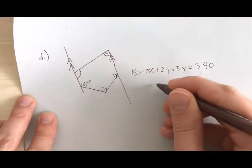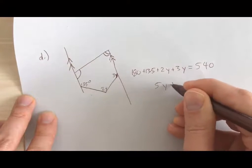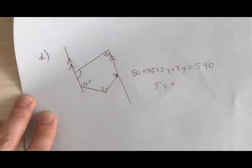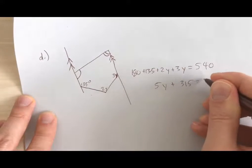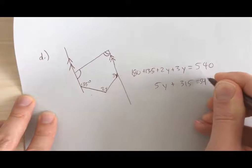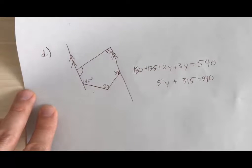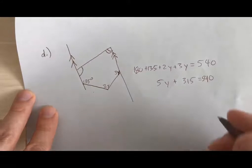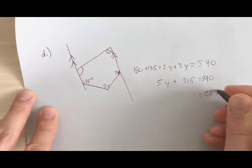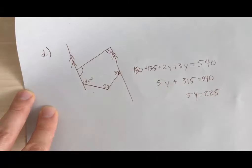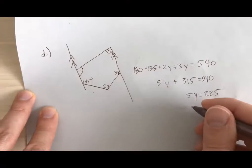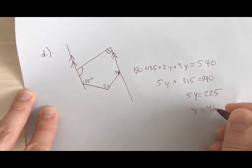Now I'm going to simplify this: 2Y plus 3Y is 5Y plus 180 plus 135. That's going to give me 315 equals 540. So I'm going to subtract 315 from both sides and get 225 equals 5Y, and then I've got to divide by 5, and that gives me 45. So Y is just going to end up being 45.